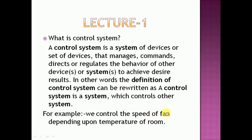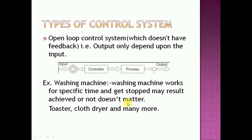The first type of control system is the open loop control system. In an open loop control system, the output only depends upon the input. The input is fed to the controller, the controller generates a signal to the process, and the process generates the output.